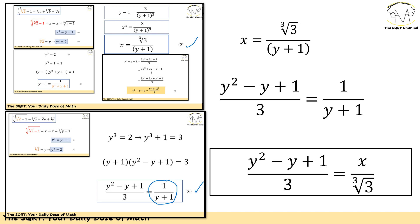From equation 5 we have x equals the third root of 3 over (y + 1), and from equation 6 we have 1 over (y + 1) equals (y squared minus y + 1) over 3. Putting these two together, x over the third root of 3 equals (y squared minus y + 1) over 3. This is very important: x is the left-hand side of the original problem, and y cubed equals 2, so we now have x expressed in terms of known values.